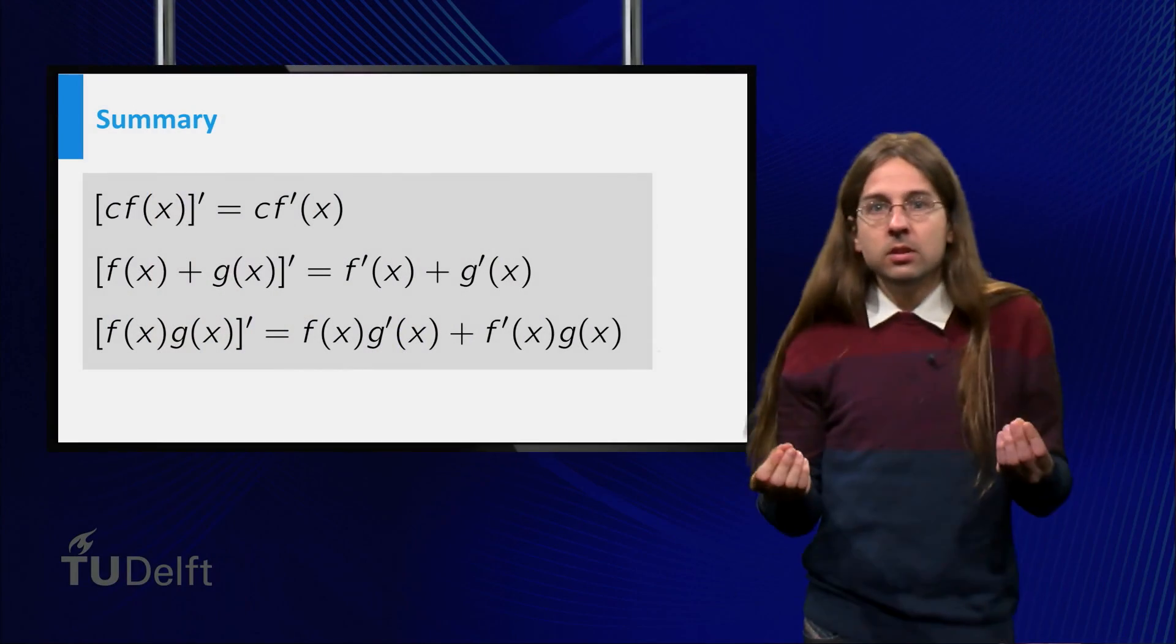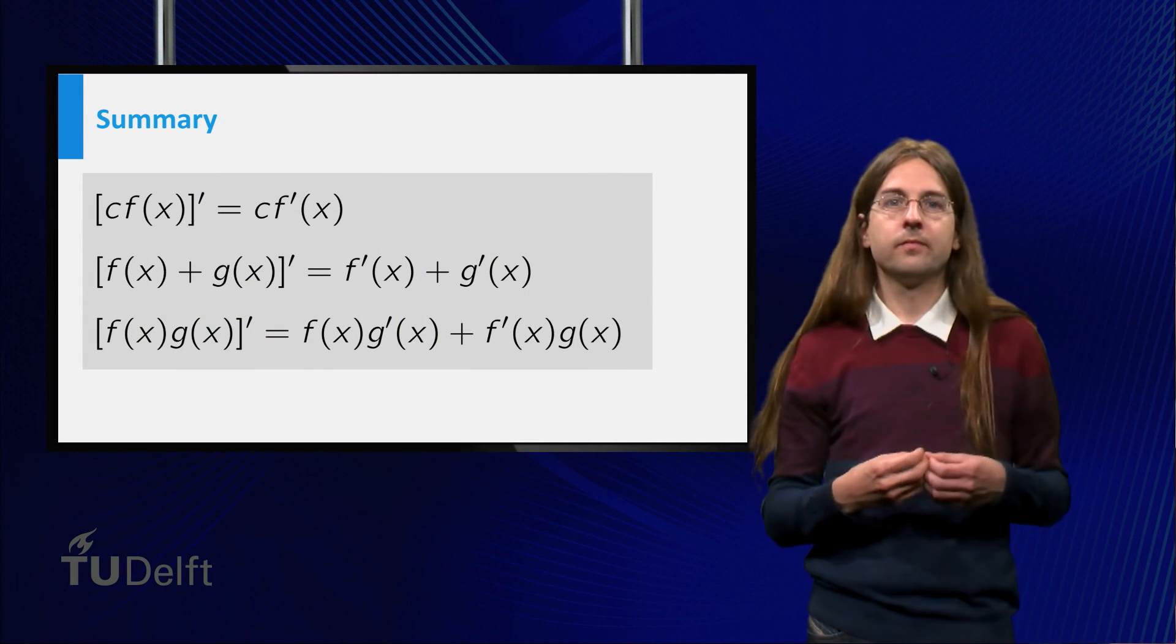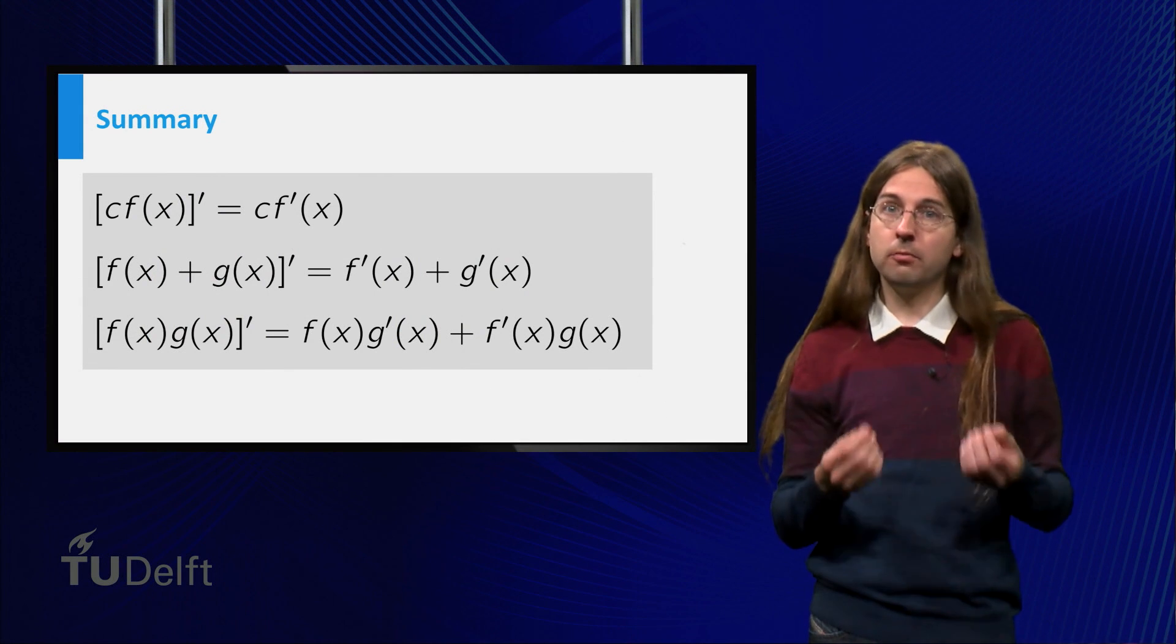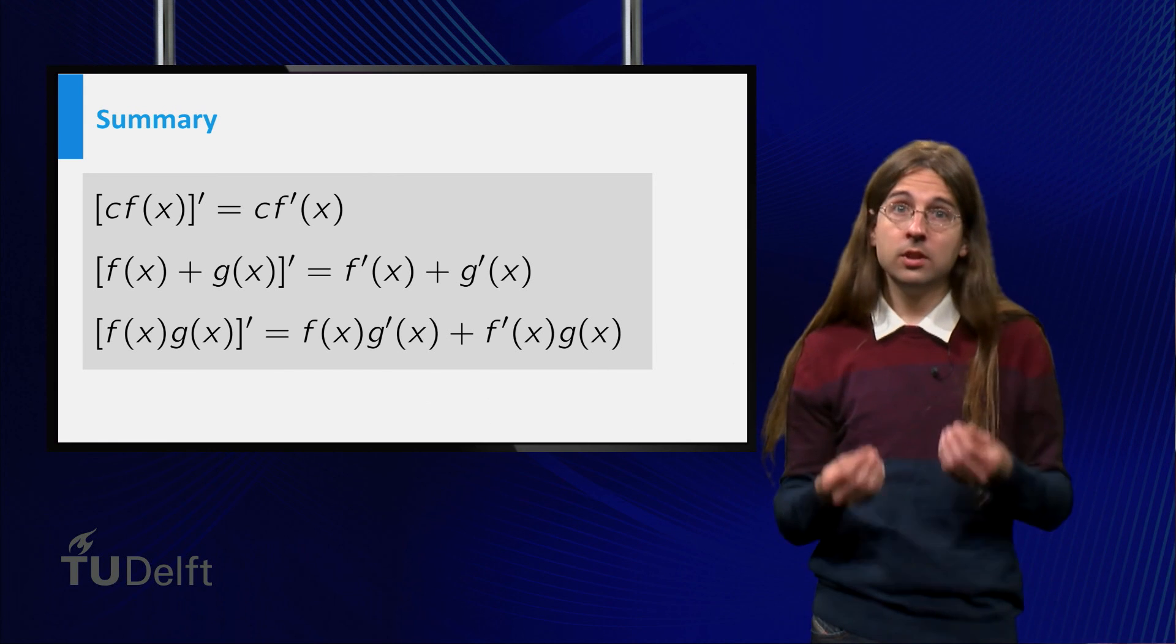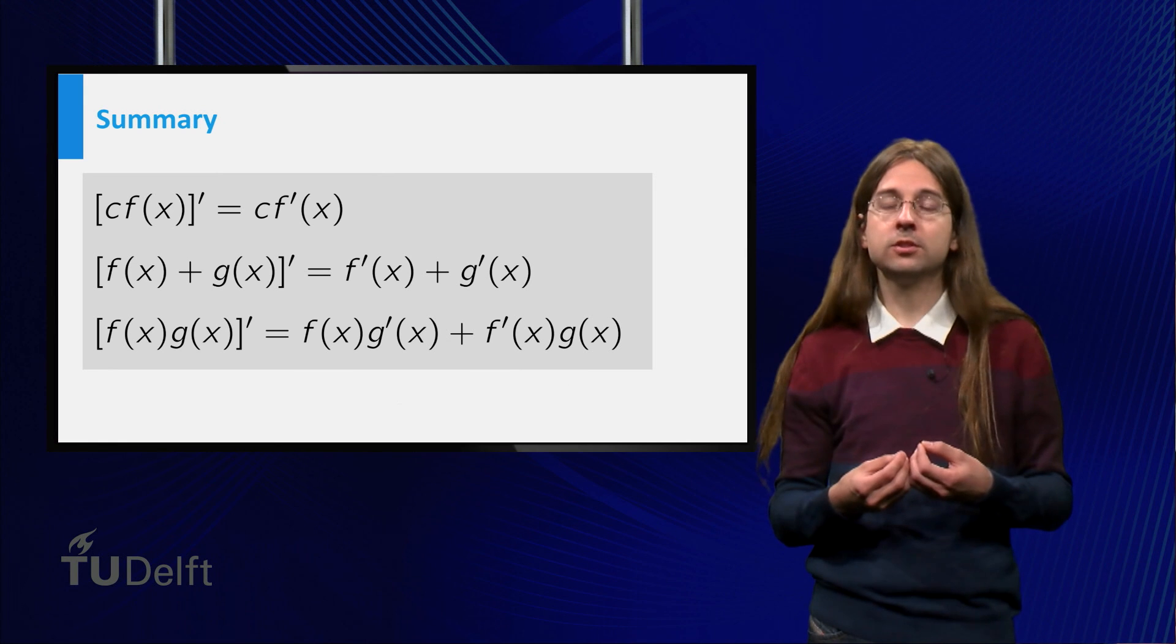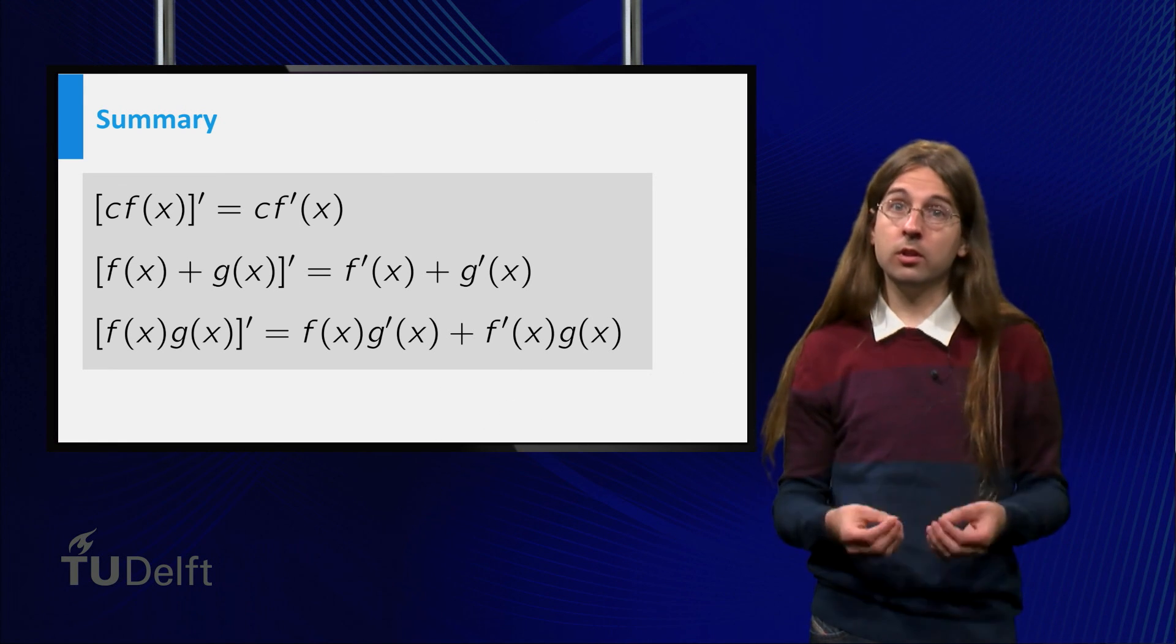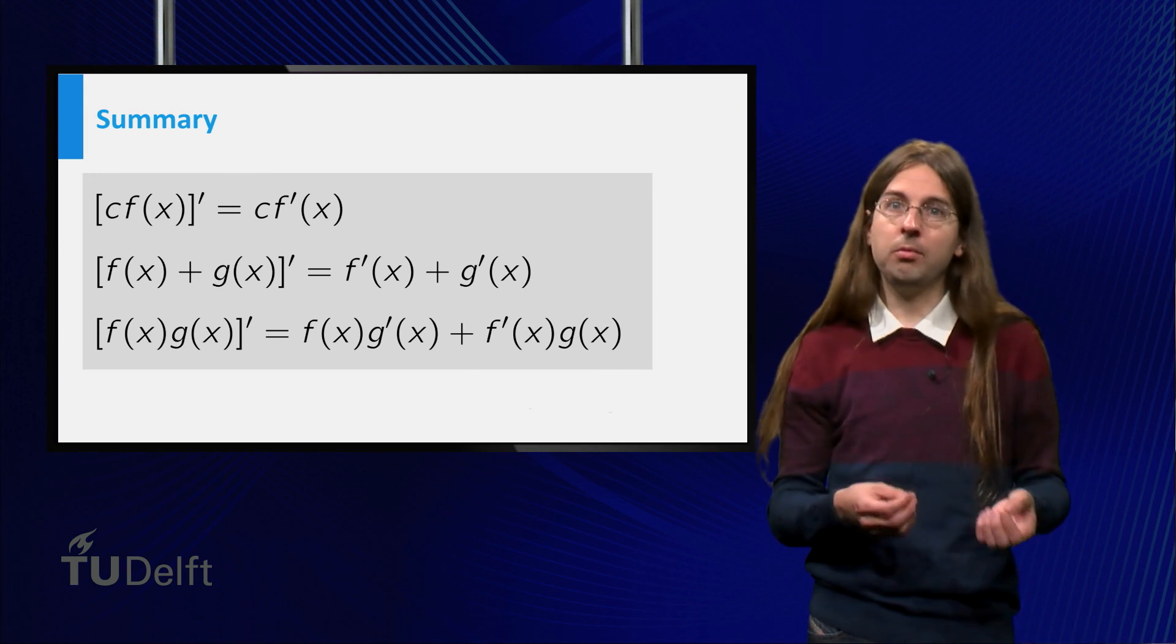In this video, we have illustrated the following three rules of calculation. Multiplying a function by a constant multiplies the derivative by the same constant. The addition rule tells you that the derivative of a sum is the sum of the derivatives. And the product rule gives the derivative of the product f times g as f times g prime plus f prime times g.